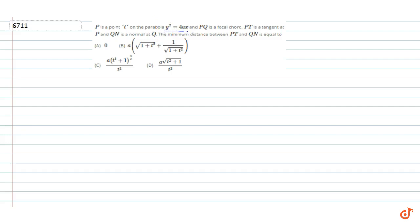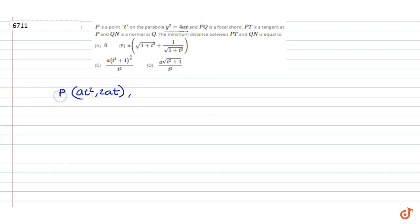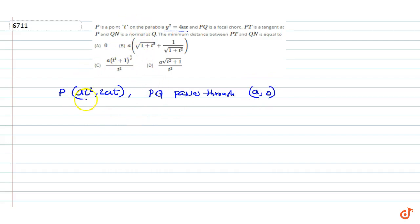The general equation of a point in parametric form on the parabola y² = 4x is given by (at², 2at). Let P be (at², 2at). Since PQ is a focal chord, PQ passes through the focus (a, 0). The equation of the line passing through P(at², 2at) and focus (a, 0) is given by: